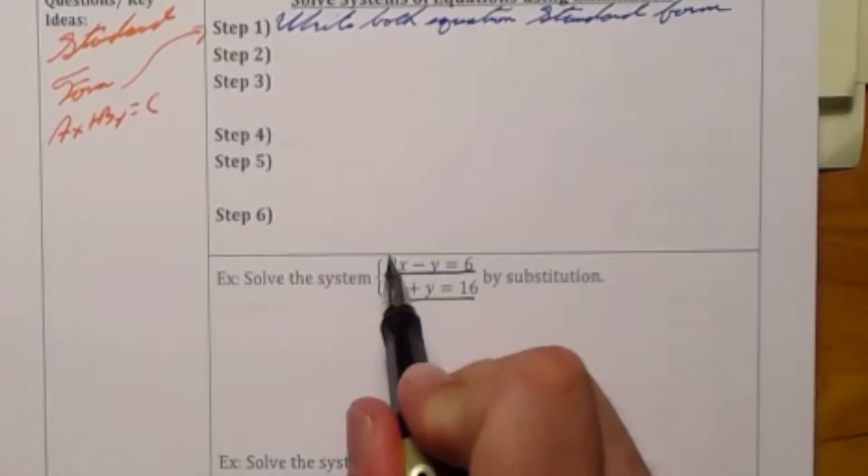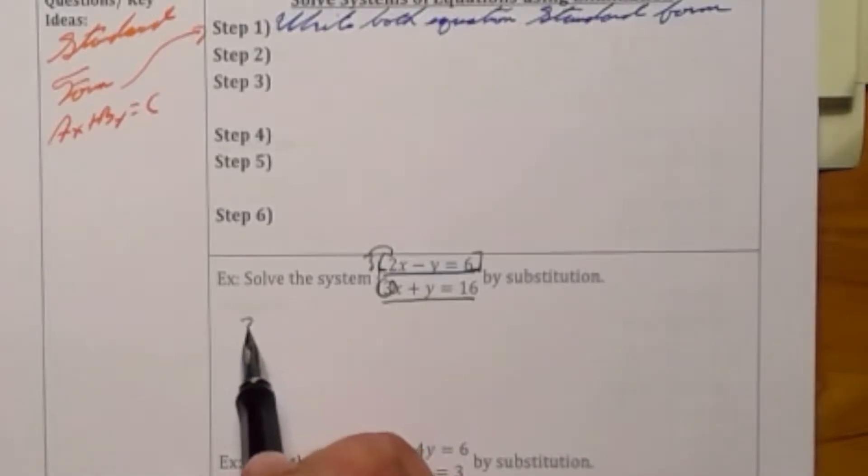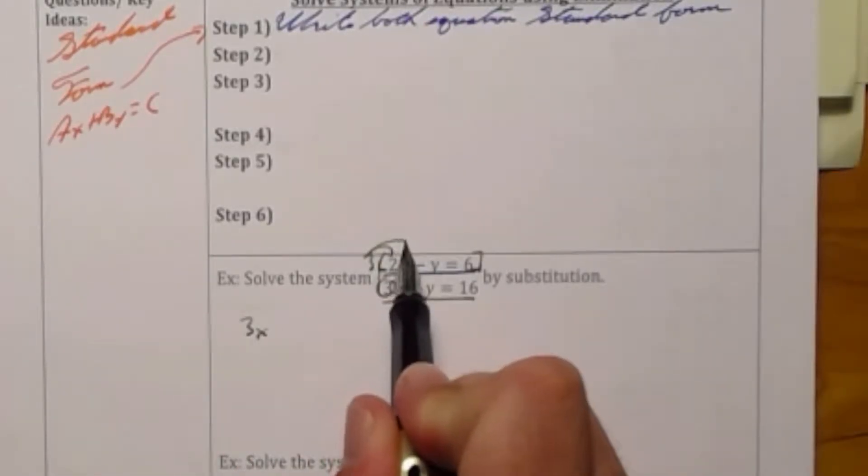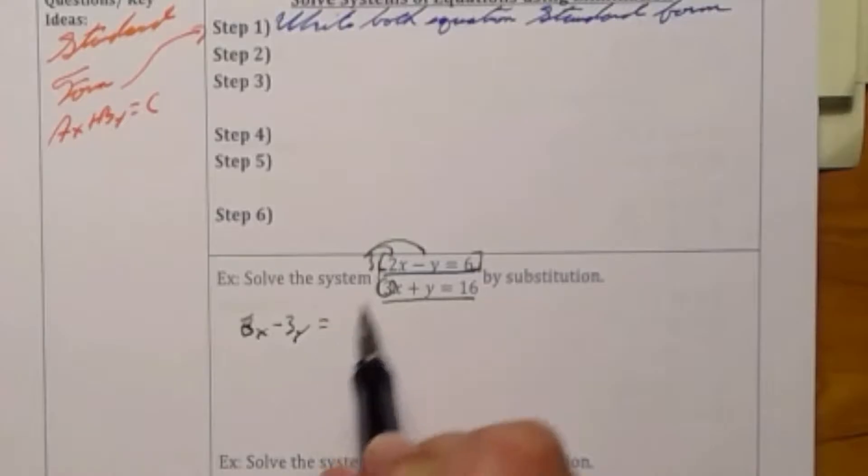My top problem I underline in blue and I'm going to multiply that entire equation by the a from the bottom equation which is three. This is going to give me a new equation of 6x minus 3y is equal to 18.